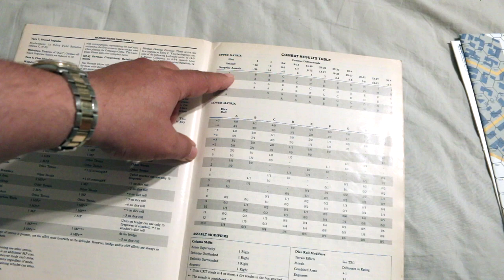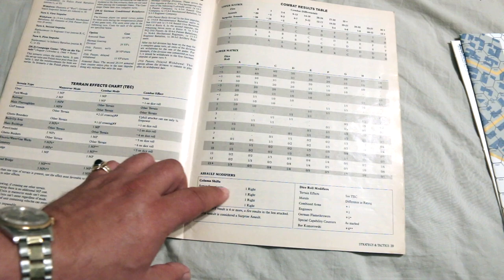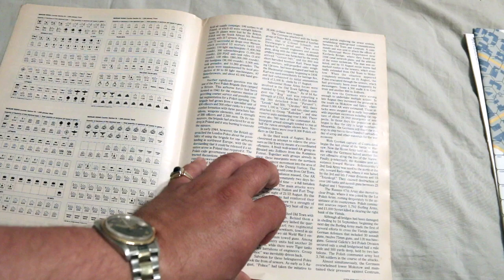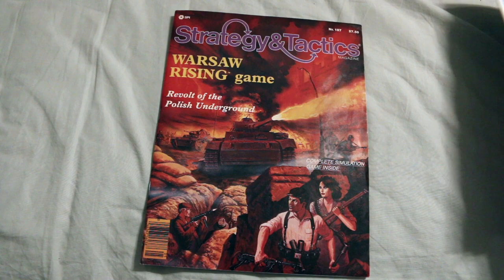And there's the terrain effects chart here printed in the book. And the combat results table. There's an upper matrix and a lower matrix. And it shows the assault modifiers and die roll modifiers. And here's what all the counters look like in case you lose one so you can make your own. That's cool.